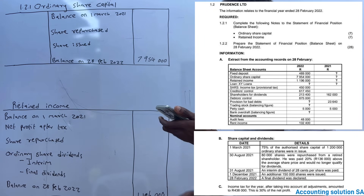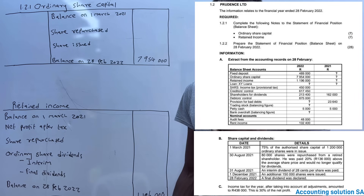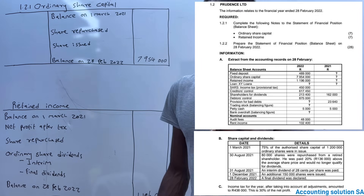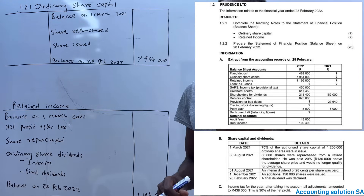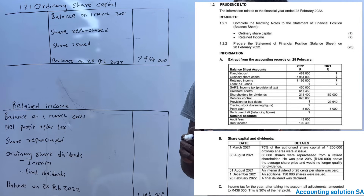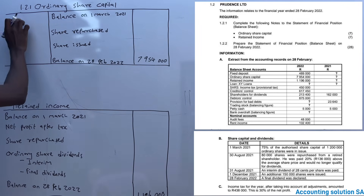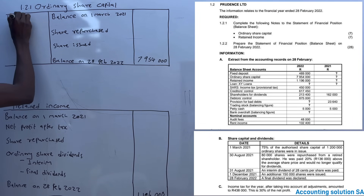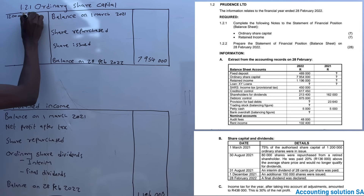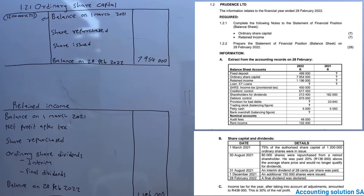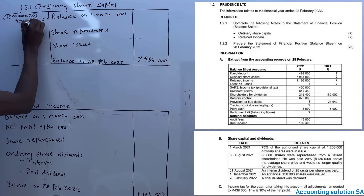The other information states that on 1 March 2021, 75% of the authorized share capital of 1.2 million ordinary shares were in issue. In other words, at the beginning, 75% of the 1.2 million shares was issued. To get shares at the beginning, we calculate 1.2 million × 75%, which gives us shares at the beginning of 900,000.